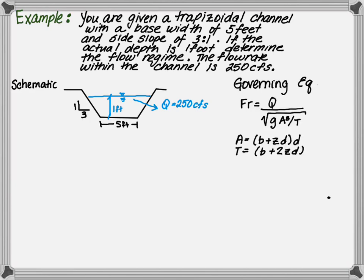In order to determine the flow regime, you need to first calculate the Froude number. The Froude number is the flow rate divided by the square root of gravity times the area cubed divided by T, or top width.